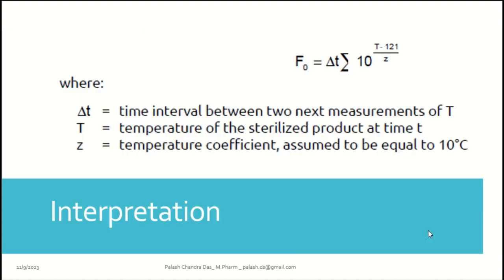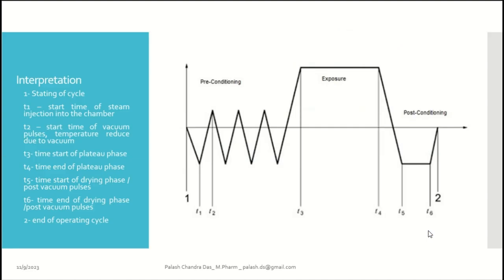The formula for F0 is: F0 = Δt × Σ 10^((T − 121) / Z), where Z is 10°C and T is the temperature of the sterilized product at time t — which can be 121°C, 115°C, 130°C, etc. — and Δt is the interval between two consecutive measurements of T. The lethality rate is the summation of 10^((T − 121) / Z). When we consider the total time of sterilization, the accumulated result becomes F0.